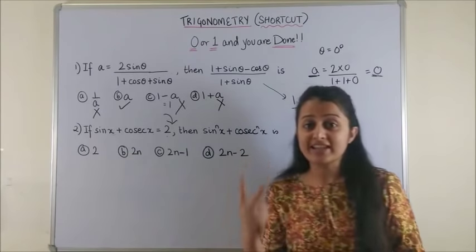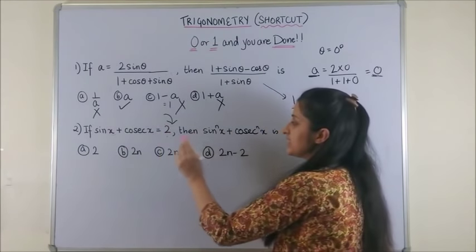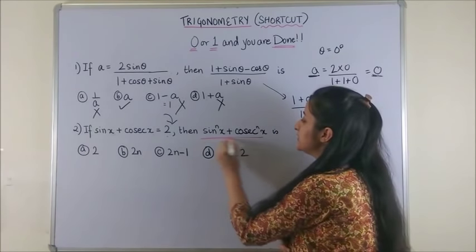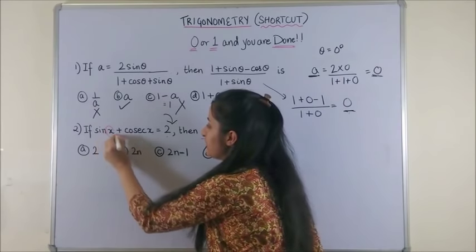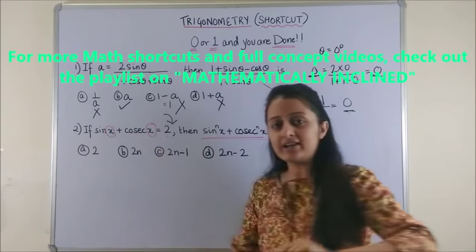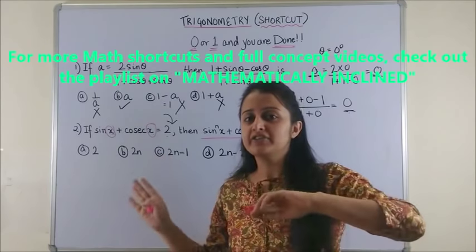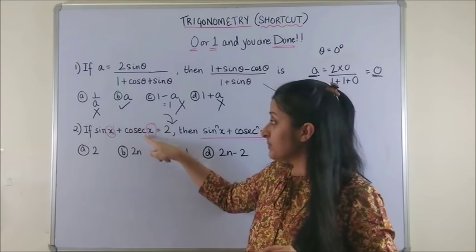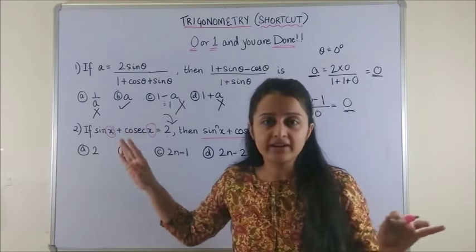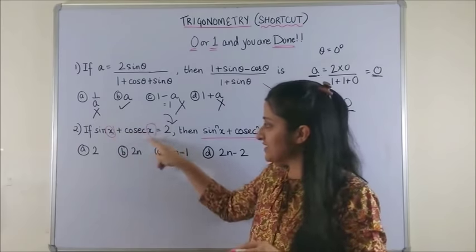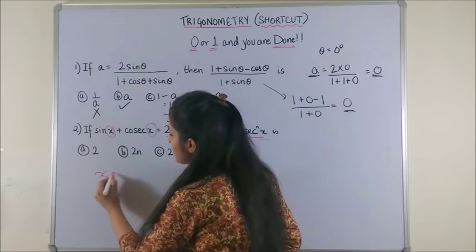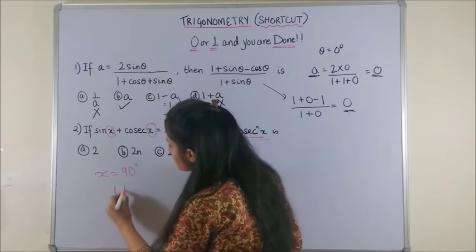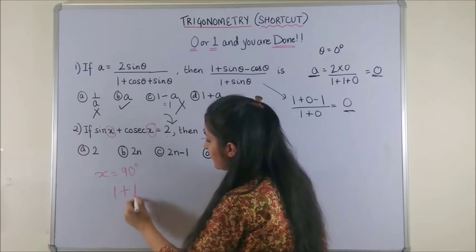Now, moving on to the second question. It says, if sinx plus cosecant x is equal to 2, so you are already given this condition. Then what would this be? Now, please note I have to carefully select x so that I don't end up taking a value which makes it undefined. Like if I take x equal to 0 degrees, since sin0 becomes 0 plus cosecant 0 becomes undefined and it anyway doesn't match with 2. If I try taking x as 90 degrees.